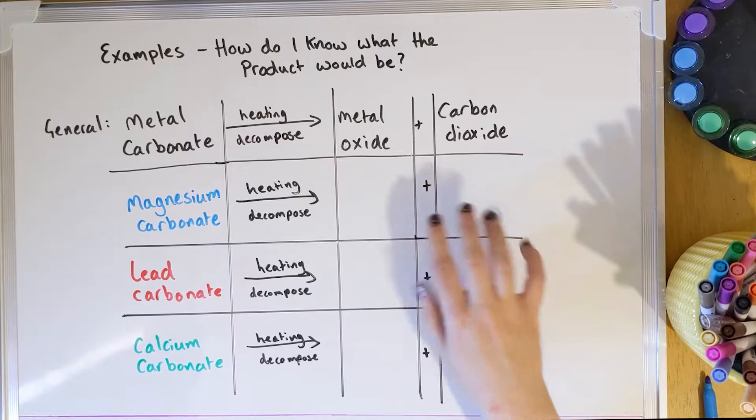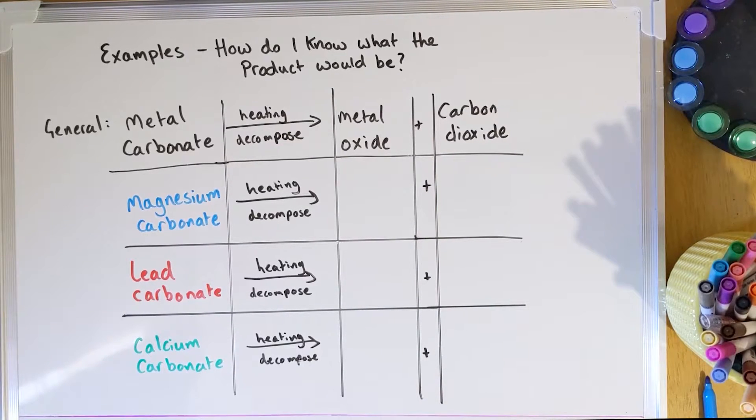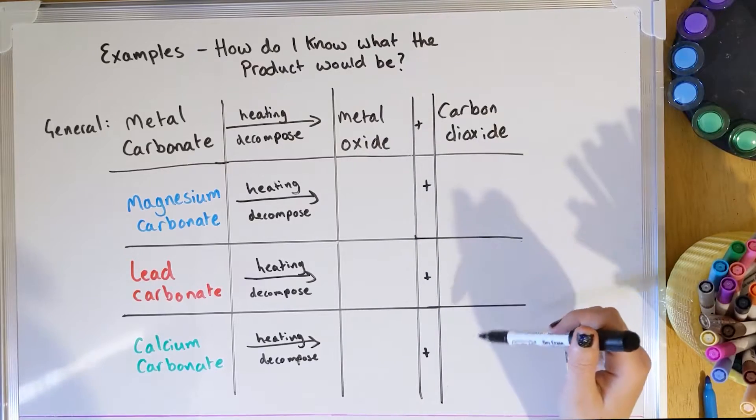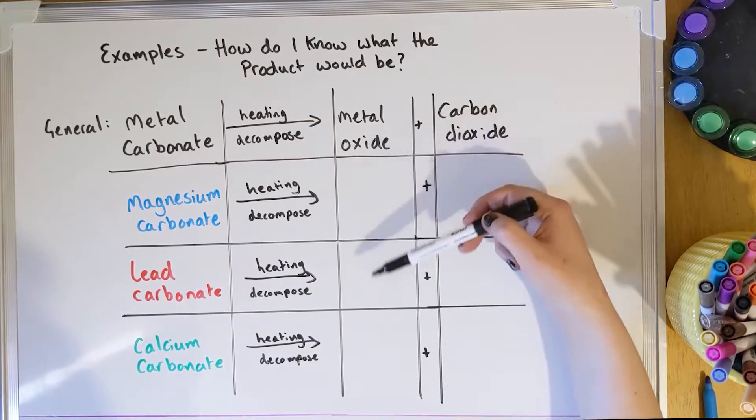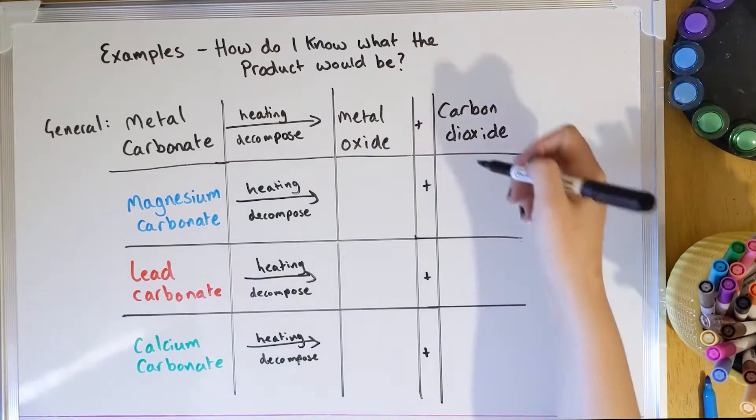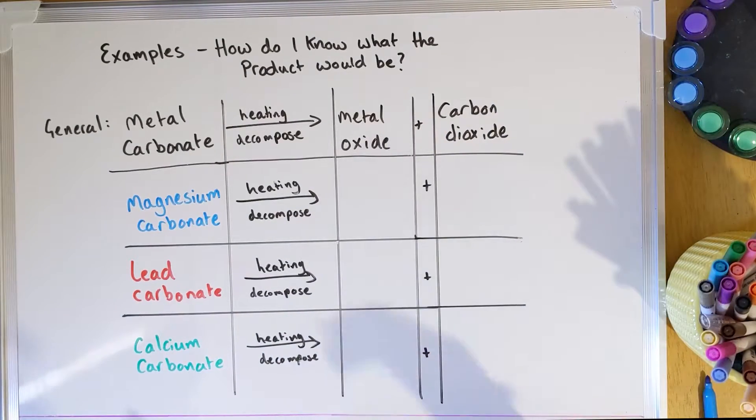All three of them are going to be thermally decomposed by heating and we're going to end up with a metal oxide and carbon dioxide. So the first thing I would do if I was asked to fill in this table is go, what can I already work out without having to think very much? I can see that carbon dioxide is going to be made every time and metal oxide is going to be made every time, but I don't know which metals yet. So I'm going to just fill in this first column with carbon dioxide.